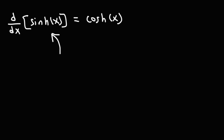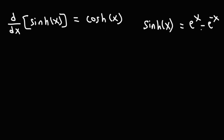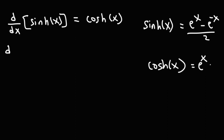Now let's prove the derivative of hyperbolic sine. Recall that hyperbolic sine is (e^x − e^(−x)) / 2. And hyperbolic cosine is the same thing but with a plus sign instead of a minus sign: (e^x + e^(−x)) / 2.